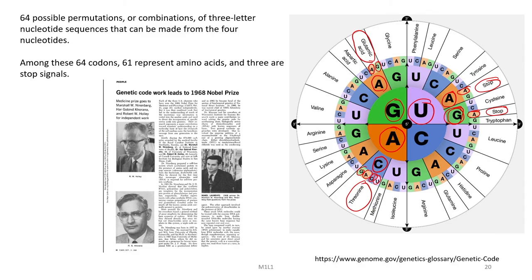For this work on the genetic code, the Nobel Prize was awarded in 1968 to Nirenberg, Har Gobind Khorana, and Holley for their independent establishment of this codon dictionary.